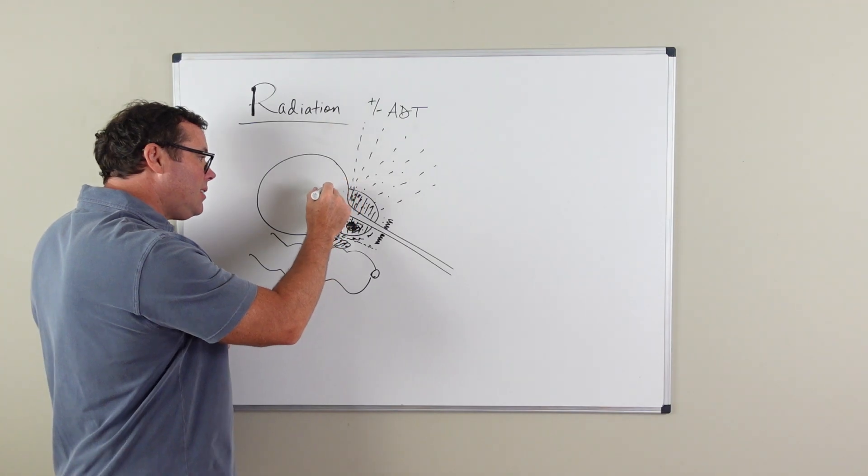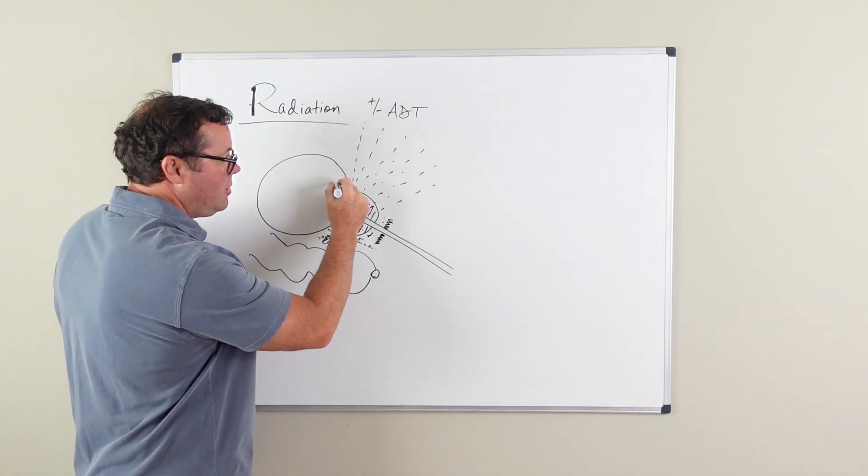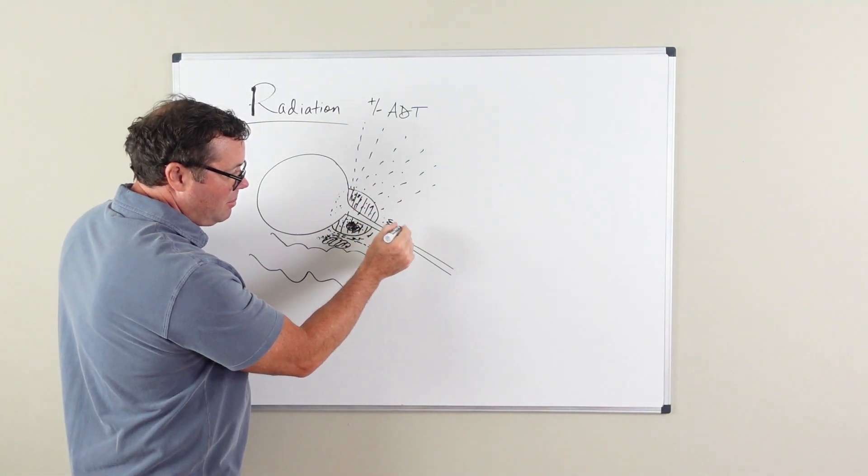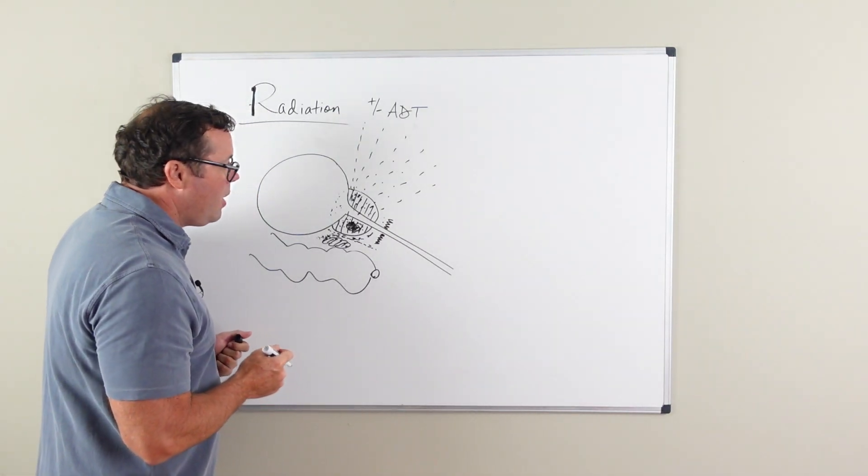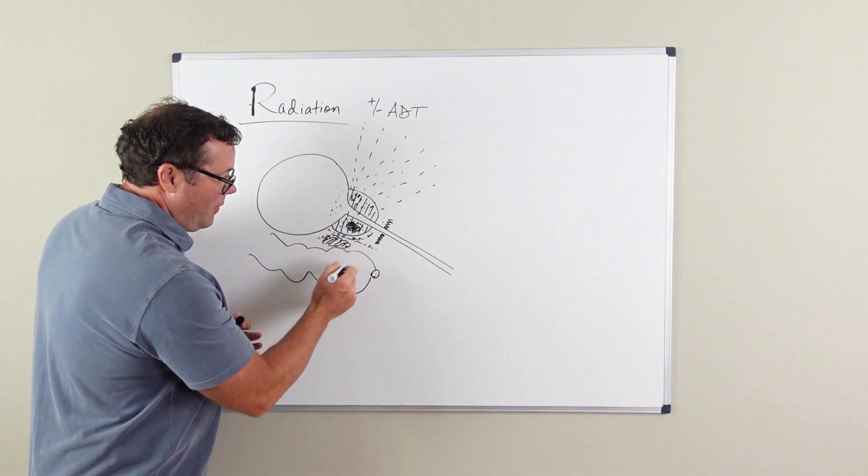There still is some scatter of radiation to the bladder and possibly to this urethra which can cause scar tissue and then erectile function.